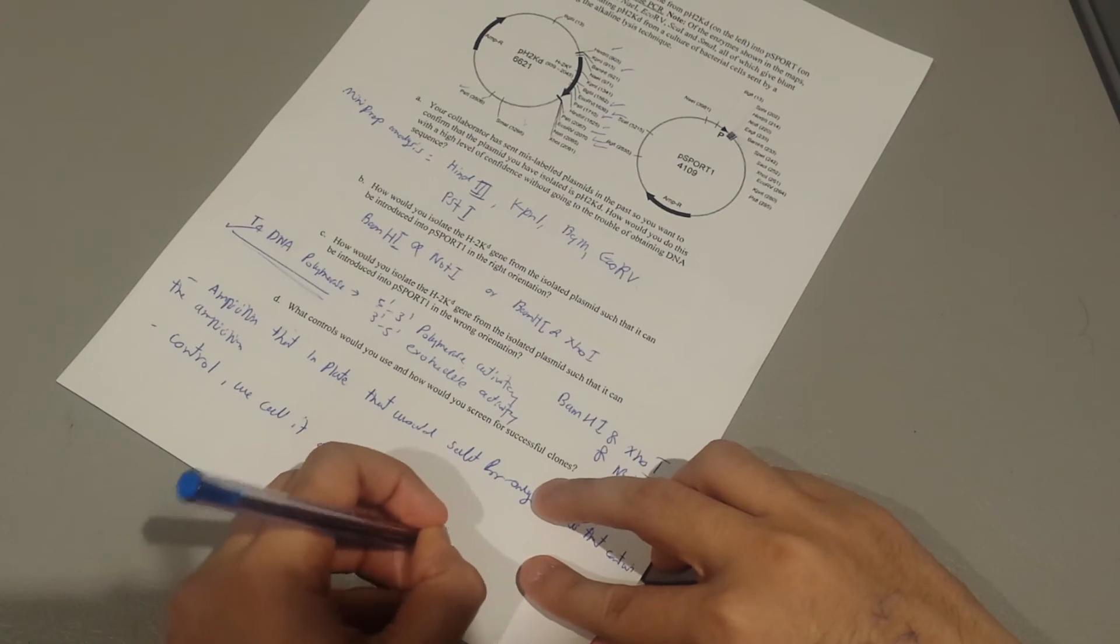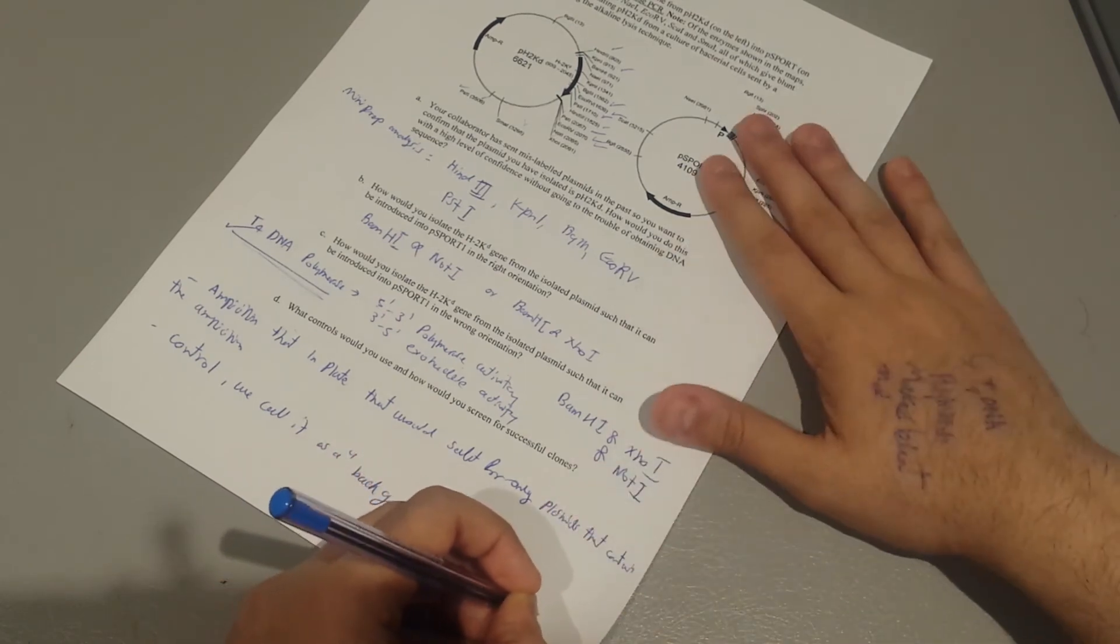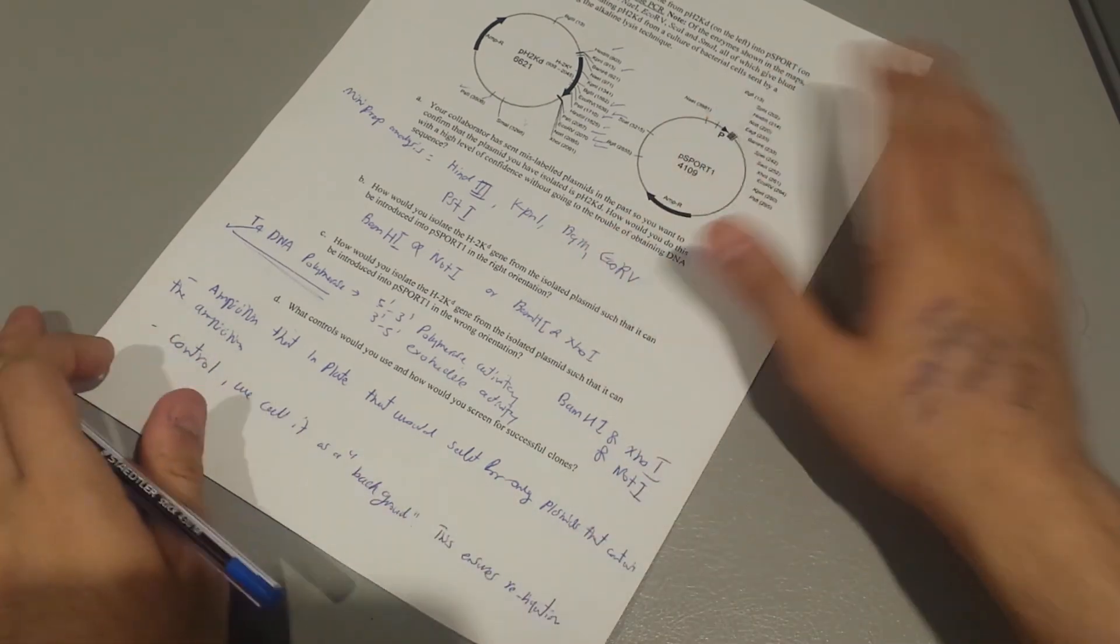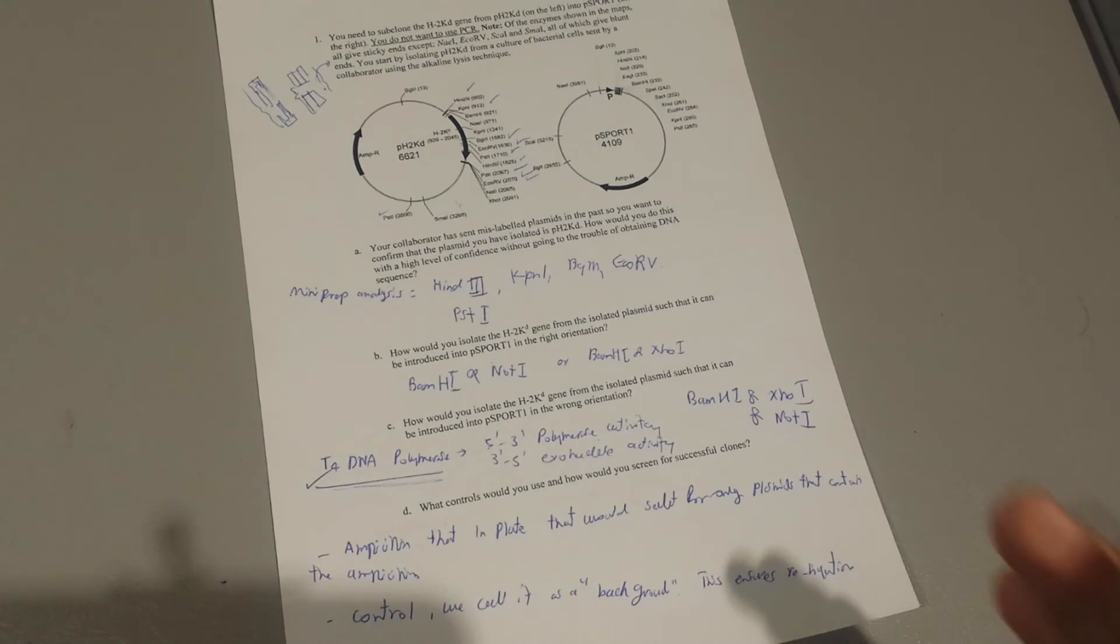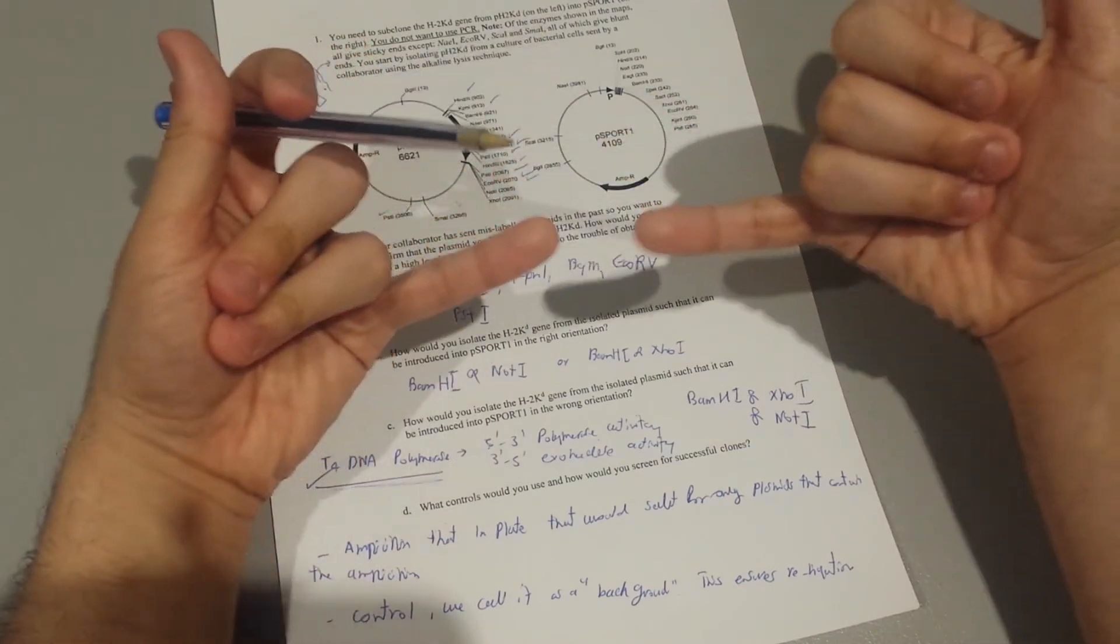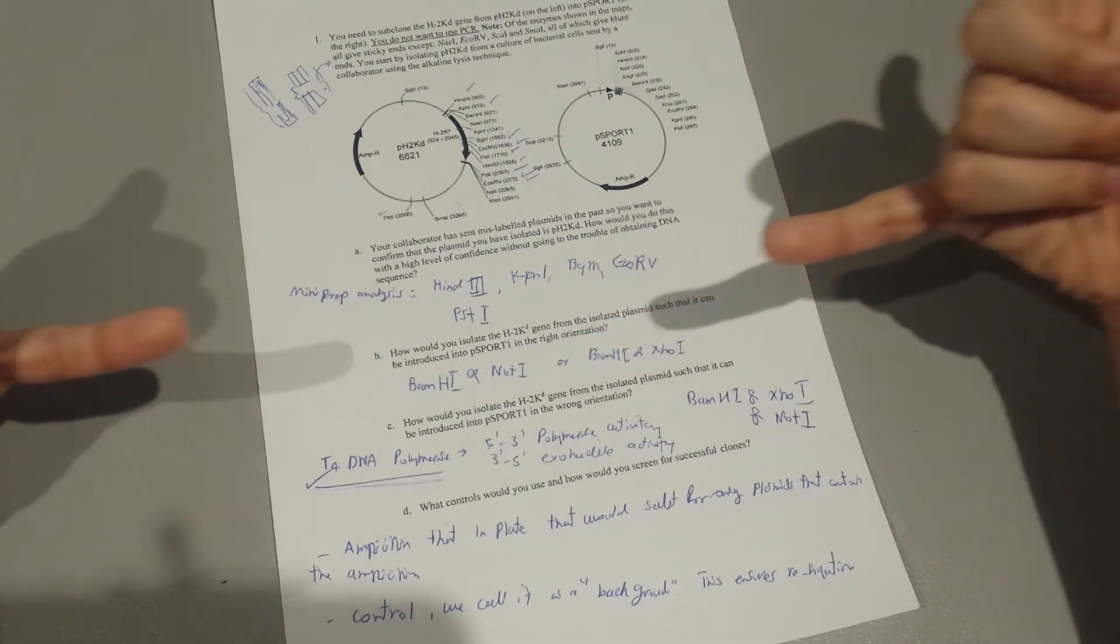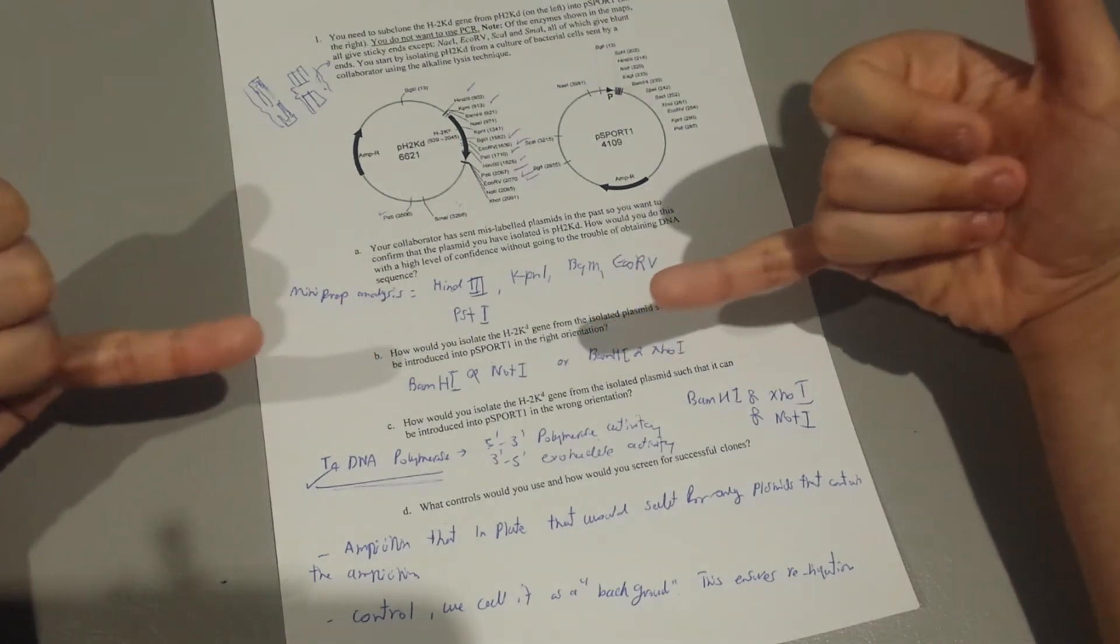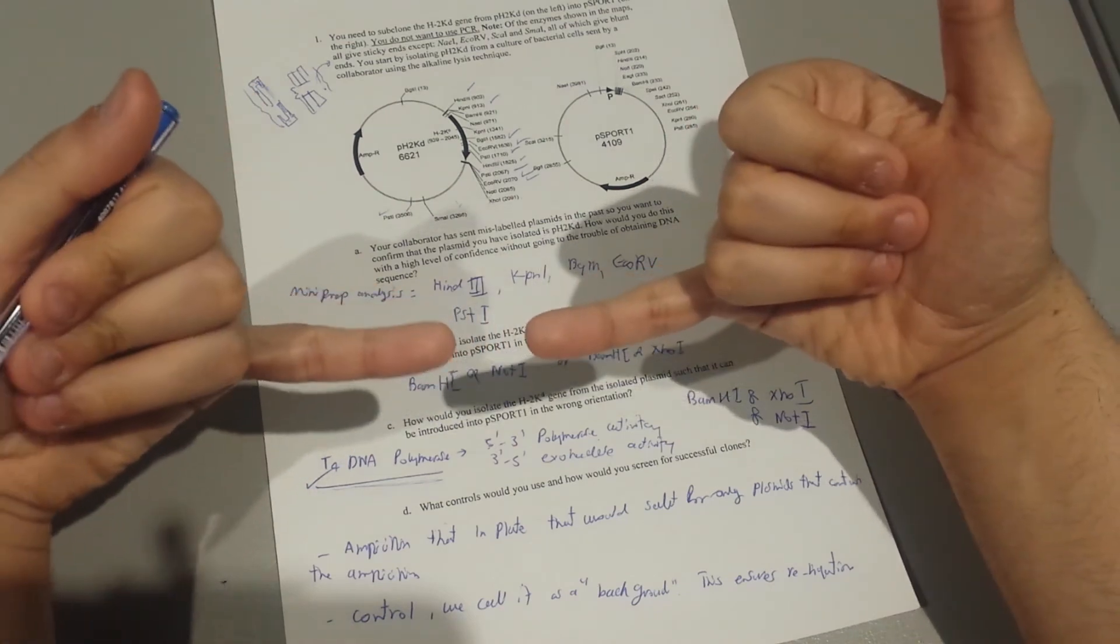This ensures you're checking for re-ligation. So you would plate this into another separate plate. In that one, you should not expect a lot of colonies, because if there is a lot of colonies, it means there was self-ligation of this plasmid. So if you open it up with the restriction endonuclease, the plasmids are subjected to self-ligation like that, so you don't want it to happen.